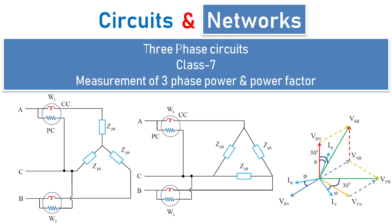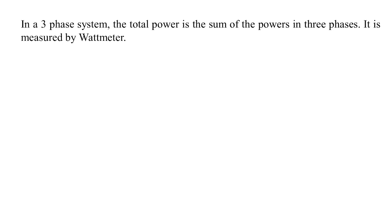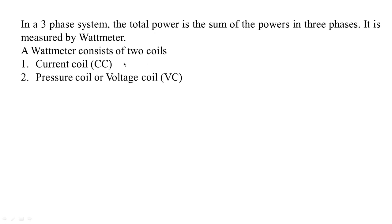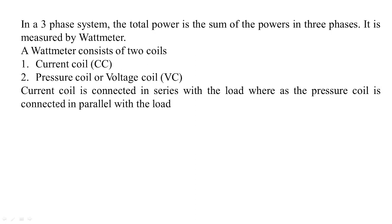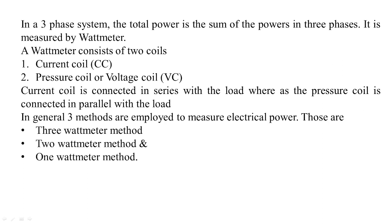Let us start with the concept. In a three-phase system, the total power is the sum of the powers in three phases. It is measured by a wattmeter. A wattmeter consists of two coils — one is a current coil and another one is a voltage coil, also called a pressure coil. The current coil is connected in series with the load whereas the pressure coil is connected in parallel with the load. The current coil and pressure coil arrangements can be done in three different fashions: three wattmeter method, two wattmeter method, and one wattmeter method.